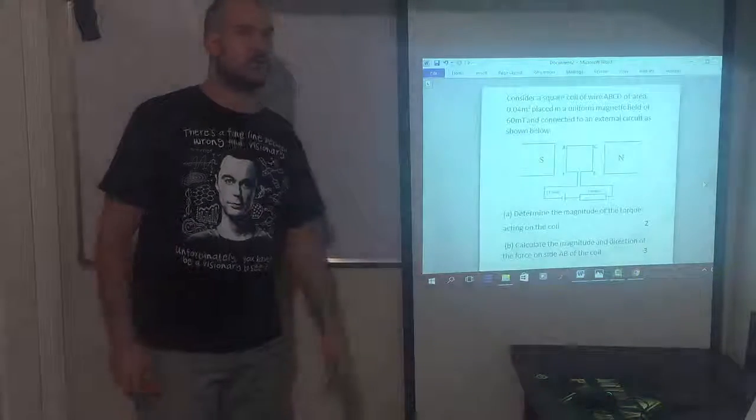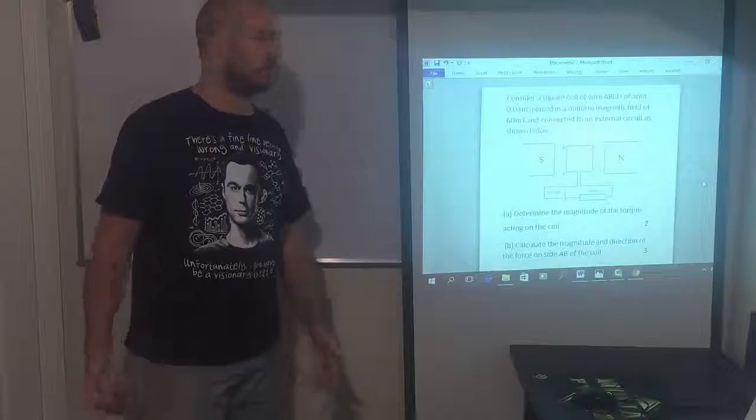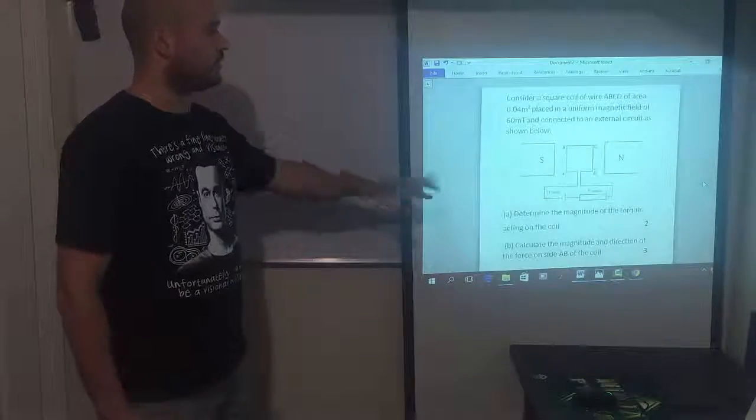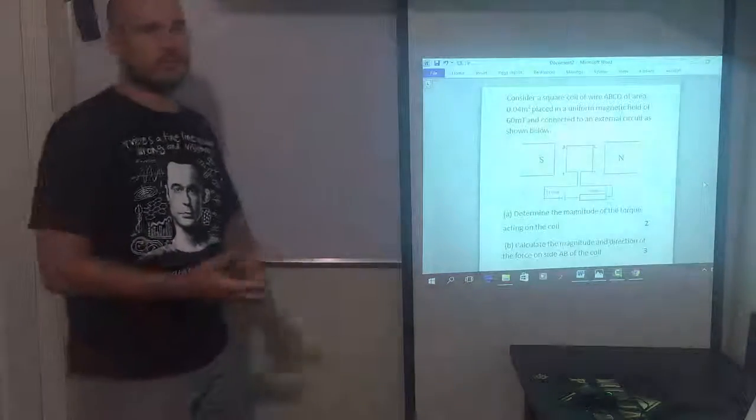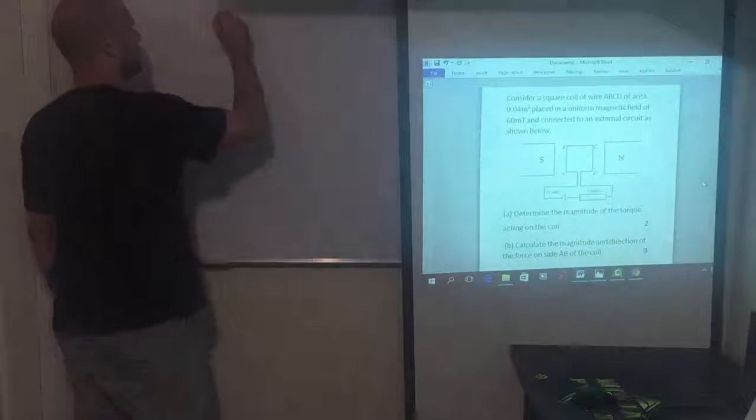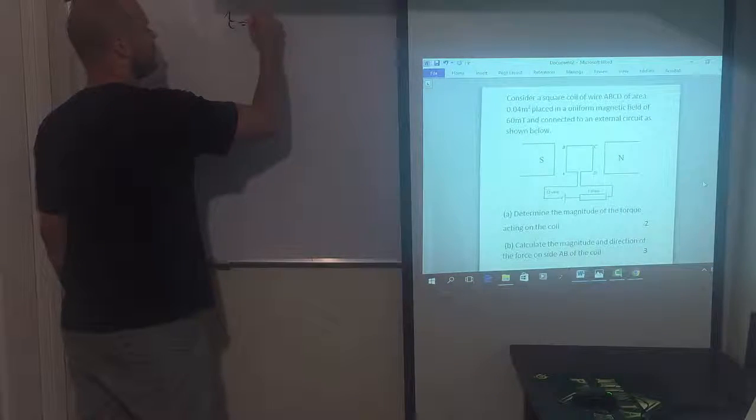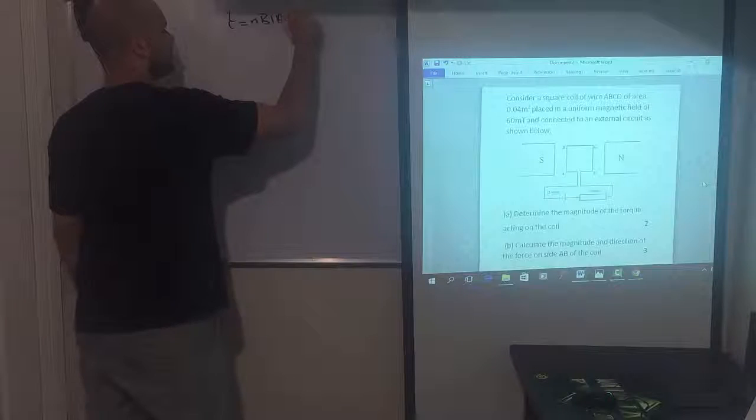It only says magnitude so we don't need to give it clockwise or anticlockwise or anything like that. We've got two marks there, so our first step is our equation. Tau is equal to NBIA cos theta.